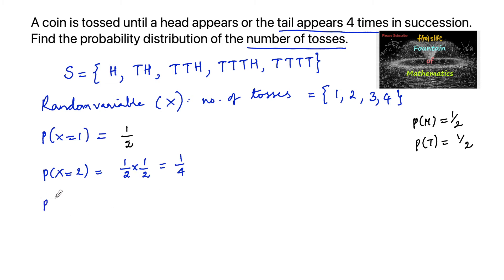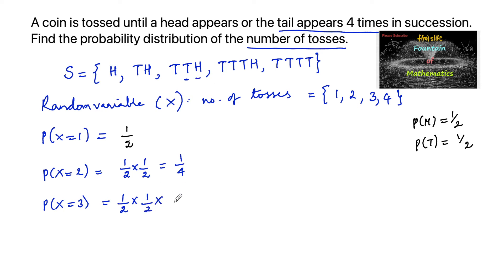For X = 3, three tosses means the first toss is tail (1/2), second toss is tail (1/2), and third toss is head (1/2), so P(X=3) = 1/2 × 1/2 × 1/2 = 1/8.